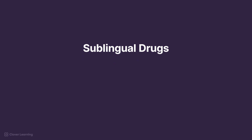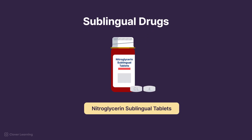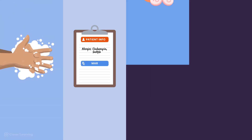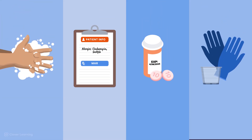Common examples of sublingual medications are nitroglycerin tablets, given sublingually for quick relief of chest pain, and epinephrine sublingual tablets, used for rapid response to severe allergic reactions. Now let's look at the procedures for the different routes for administering drugs through a patient's mouth. Regardless of the medication, its form, or its route for administration, you should always follow these basic protocols when preparing medications.